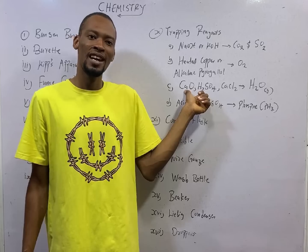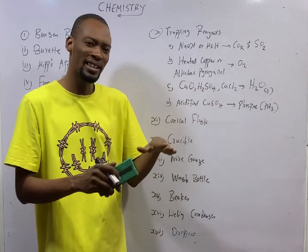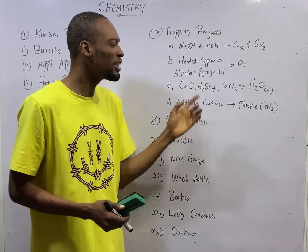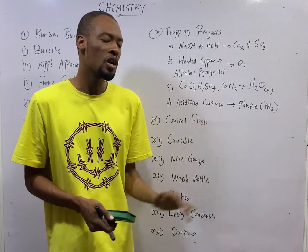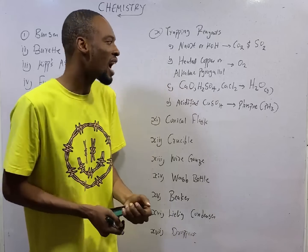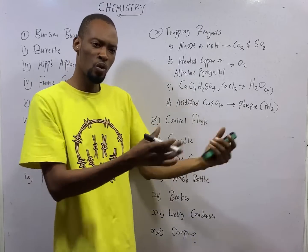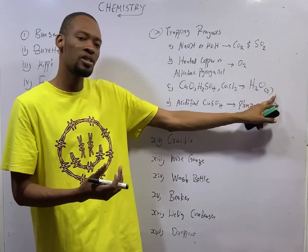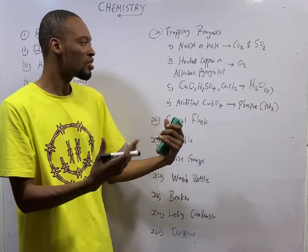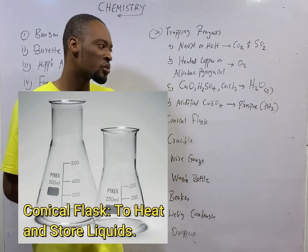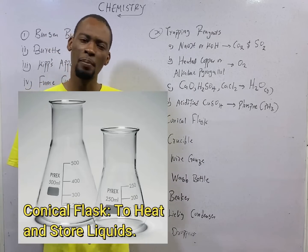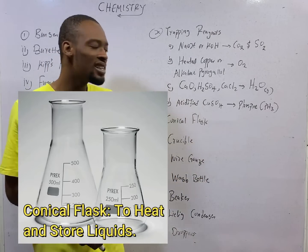Quick lime. Calcium oxide is referred to as quick lime. That is the common name. Quick lime, tetraoxysulfate-6 acid H2SO4, calcium chloride CaCl2 are used to trap water vapor. Water in gaseous state. That is what they are used to trap. Then,